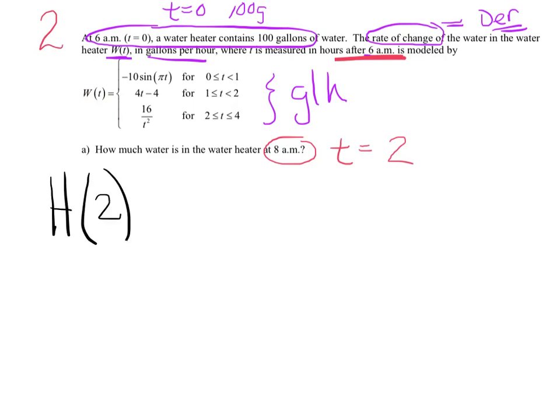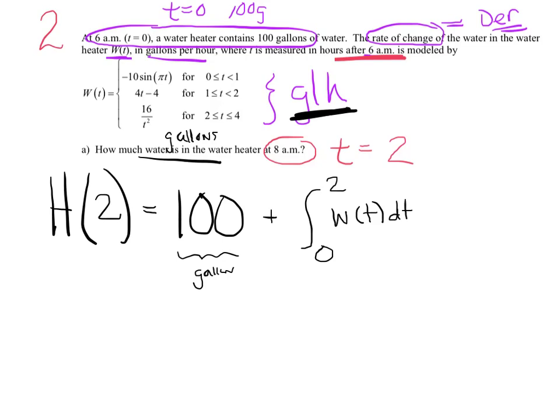Let's set up a function. I'm not going to use w for water because they've stolen the w letter. I'll use h for heater. h of 2 equals, I'm going to start with my 100 gallons. It says how much water. I want all of my answers to be about gallons. I have 100 gallons plus - what do you have to do to w of t? If it's in gallons per hour and you want gallons, you clearly have to integrate it from 0 to 2 of w of t dt.